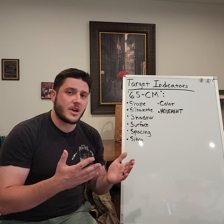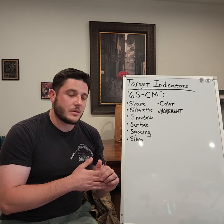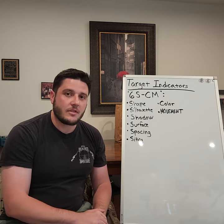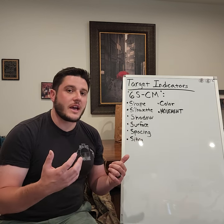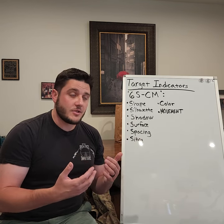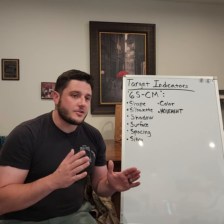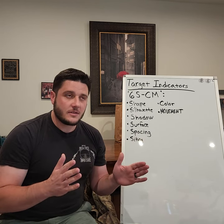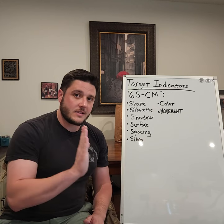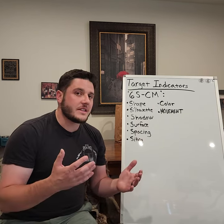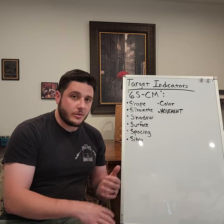Surface in this context really just means shine. Something with a highly polished surface is going to give off a shine. Only a couple places in nature actually give off a shine — like a glimmer off a body of water or ice. Other than that, if it's shining it's probably man-made, which you don't want if you're trying to blend. Spacing is on here because in nature things are never evenly spaced. Humans are some of the only things that build things evenly spaced, like slats on a fence.